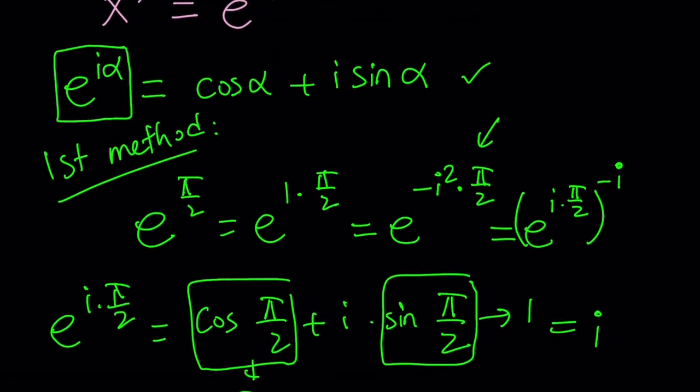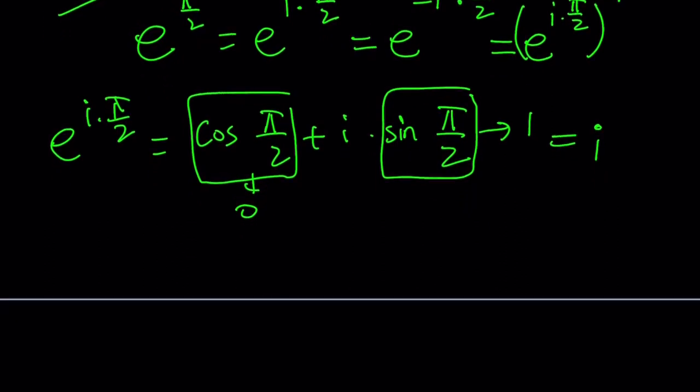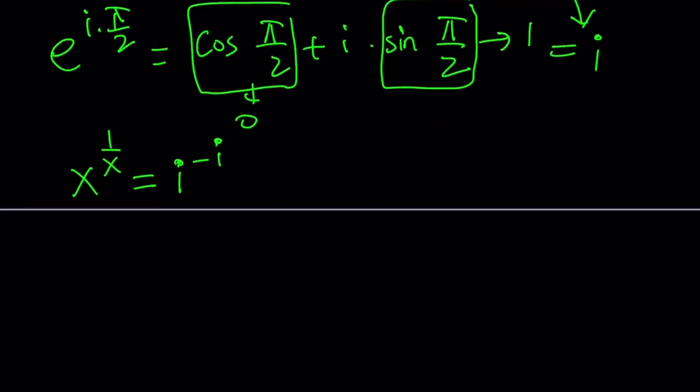So just another way of writing i, e to the power i times pi over 2. And of course, there is infinitely many ways to write it. Now, we got i on the right-hand side. And we have x to the power 1 over x still on the left-hand side. So let's go ahead and put these two together, right? So we got x to the power 1 over x equals e to the power i pi over 2 to the power negative i. So this part is i, right? So we now have i to the power negative i. They still don't agree that much. We have the x at the bottom or the base at the base, but the exponent doesn't really match up, unless you do a little bit of manipulation.